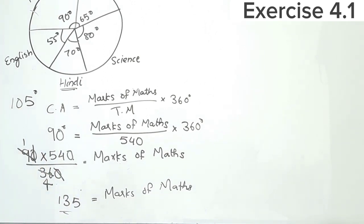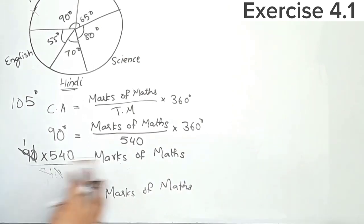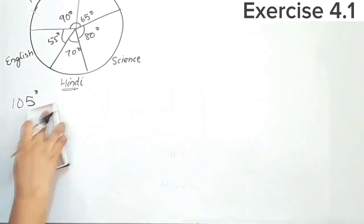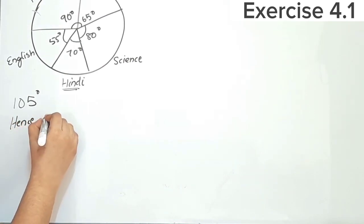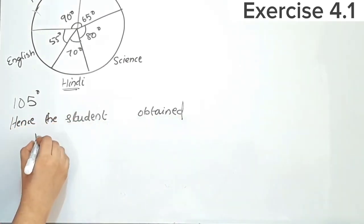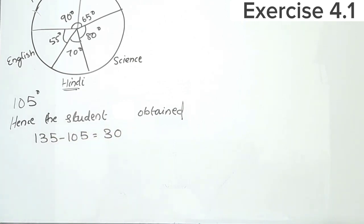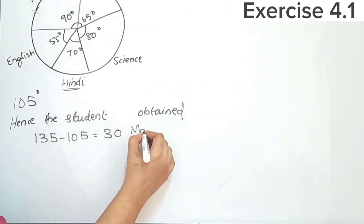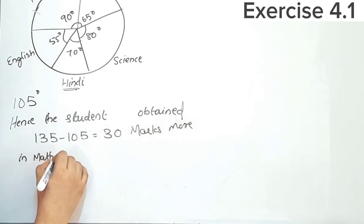The question asks how many more marks were obtained in mathematics than in Hindi. We subtract: 135 minus 105 equals 30. Hence, the student obtained 30 more marks in mathematics than in Hindi.